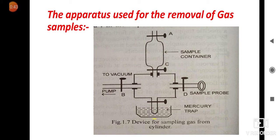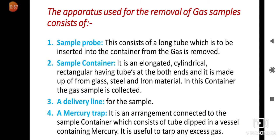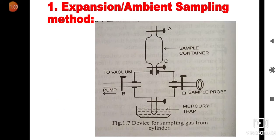This is about the apparatus or device used for sampling gas from the compressed cylinder. Now we will see the first method, that is the expansion or ambient sampling method. Ambient means sampling of the air from the atmosphere or compressed cylinder.